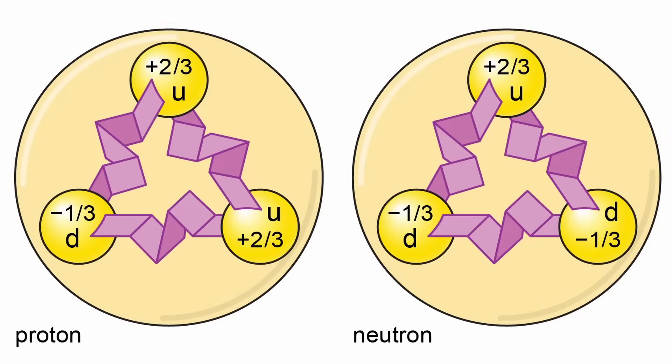An up quark has a charge of plus two over three. A down quark has a charge of minus one over three. A proton is equivalent to two up quarks and one down quark, which altogether has a charge of plus one. A neutron has one up quark and two down quarks, with a charge of zero.